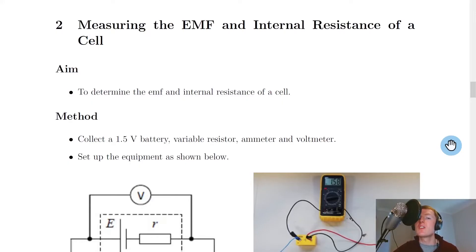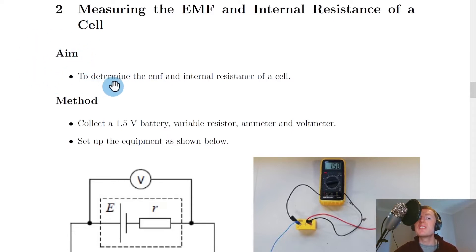Now measuring the EMF and internal resistance of a cell is a compulsory experiment that you need to be able to do and describe for the higher physics exam. So we're going to look at the breakdown of a scientific report on how you could carry out this experiment. So the aim of this experiment firstly would be to determine the EMF and internal resistance of a cell.